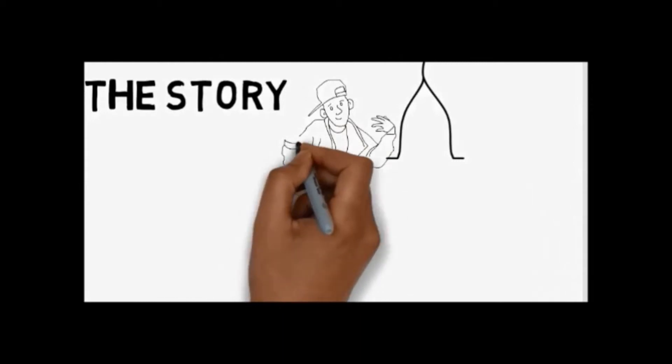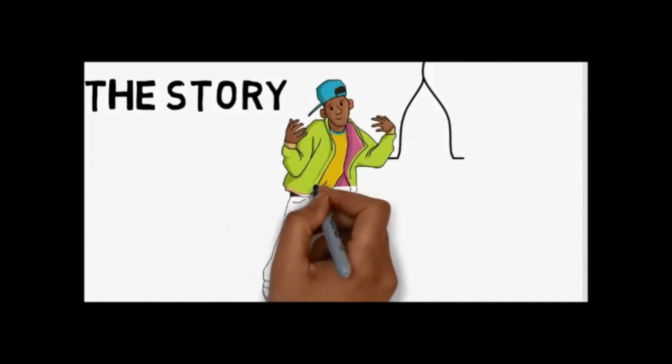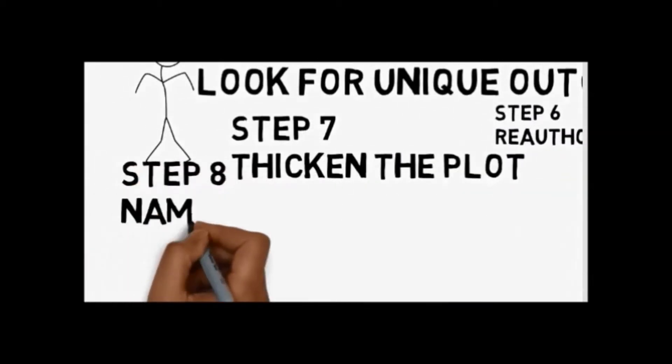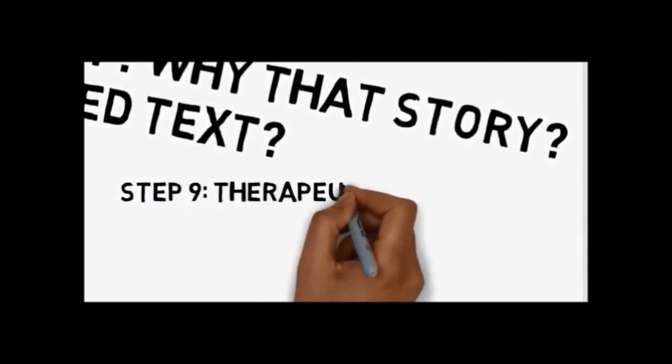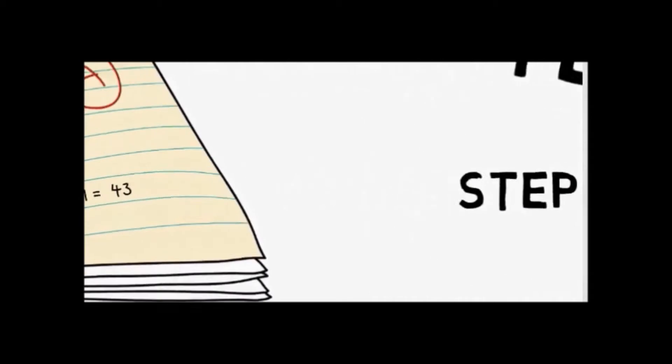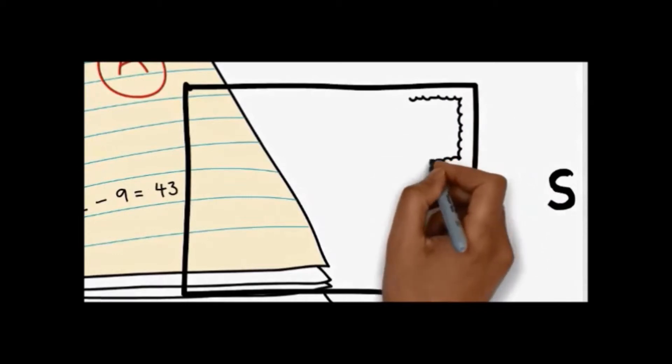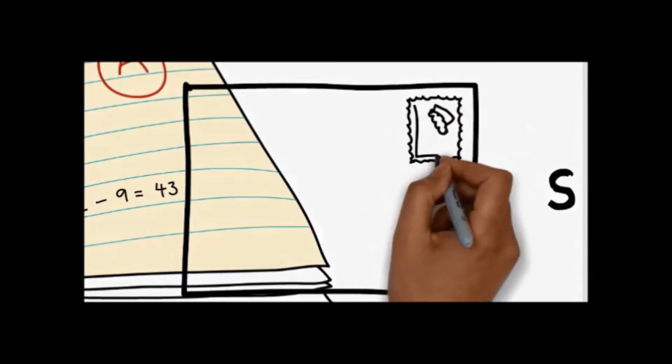Now step seven then is to thicken the plot of the story. And this is to discuss more details of this new alternate narrative, adding more characters and other perspectives to support the alternate story. Step eight then is to name this new counter plot. And this move gives this plot more definition and helps to organize therapy more easily. When a particular event occurs, one can ask which plot was associated with that event. Was it on the side of the problem or on the side of the counter plot?